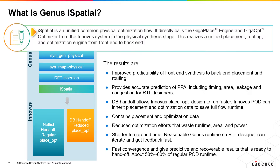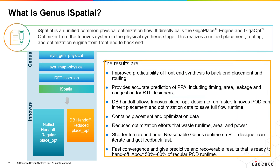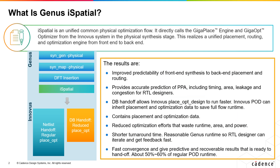Using the identical software engine accomplishes a unified placement, routing, and optimization flow from front-end to back-end. Optimizing the iSpatial Flow using the same engines improves the predictability of front-end synthesis to back-end placement and routing. It reduces optimization efforts that waste runtime, area, and power, and it shortens the turnaround time.